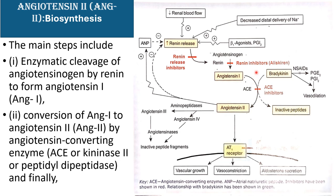Angiotensin 1 is biologically inactive but it is converted into angiotensin 2 in the presence of angiotensin converting enzyme. The second drug class is angiotensin converting enzyme inhibitors. These drugs act on this enzyme and inhibit the conversion to angiotensin 2. If angiotensin 2 is formed, it is a very strong substance which causes vasoconstriction and raises blood pressure. So these two steps are very important for conversion and blood pressure elevation.